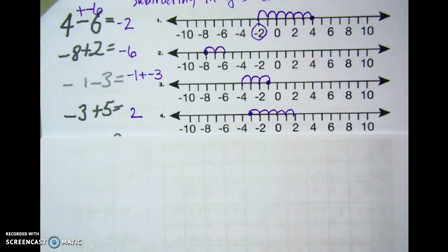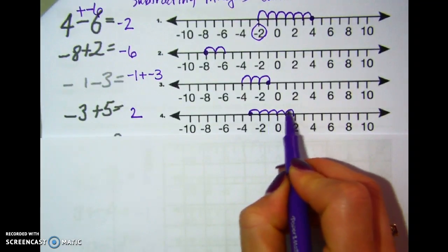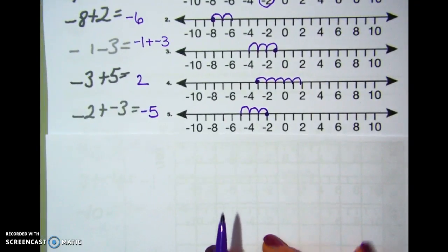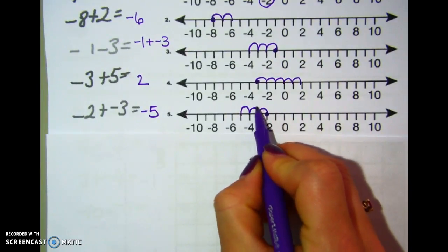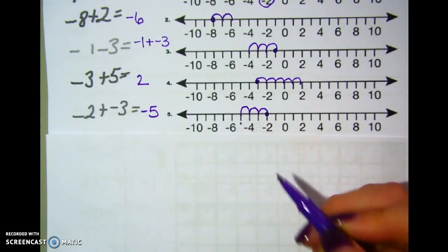Okay, here's number 4. I'm starting at negative 3, adding 5. So hopping to the right, and I end up at 2. If I start at negative 2, and I add negative 3, adding negatives means you go towards the negatives. We're hopping to the left, and I end up right there at negative 5.